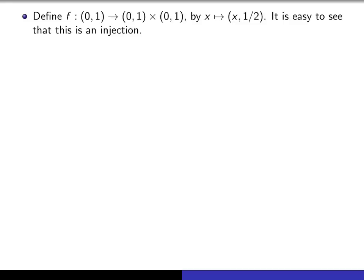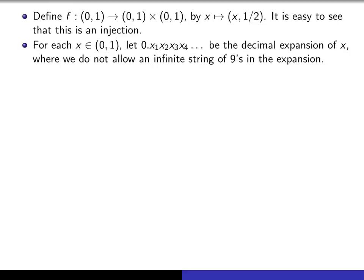Now one of these injections is really easy to get. It's very easy to map (0,1) into the product. We just simply map x to (x, 1/2). That's just one way we could do it. There are lots of ways we could do it, and it's easy to see that that's an injection.